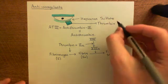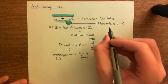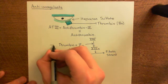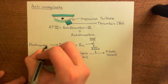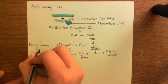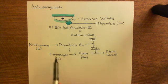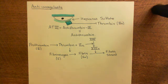So antithrombin III is going to inhibit any thrombin that is formed within the bloodstream. Thrombin — factor 2a — is an extremely important coagulation factor, and we'll see its other targets in the next video.